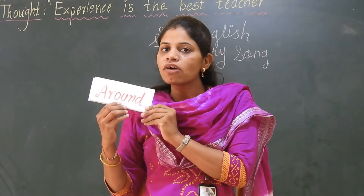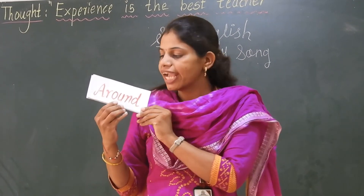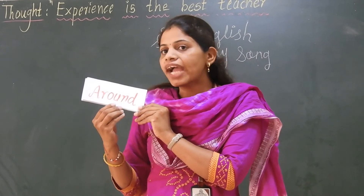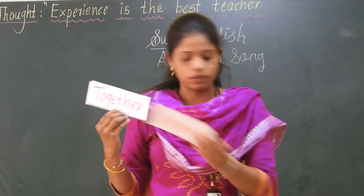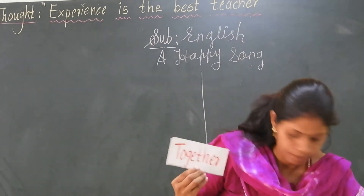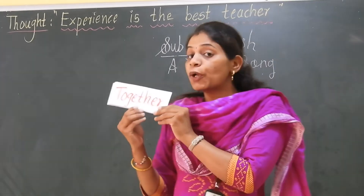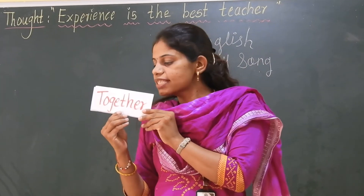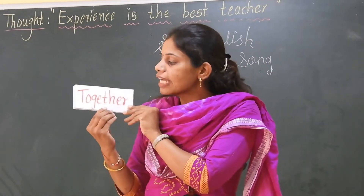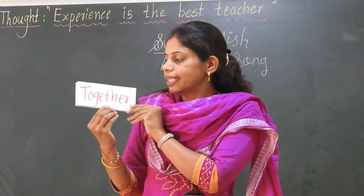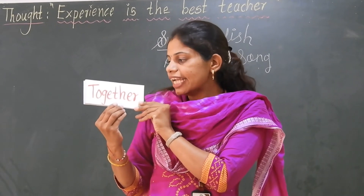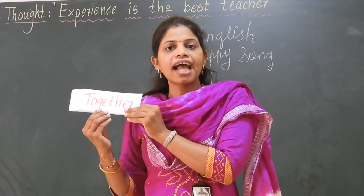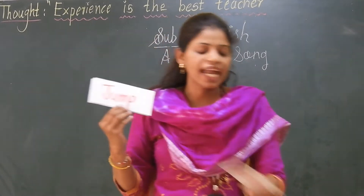Around. What is the spelling of around? A, R, O, U, N, D. Around. Together. What is the spelling of together? T, O, G, E, T, H, E, R. Together.